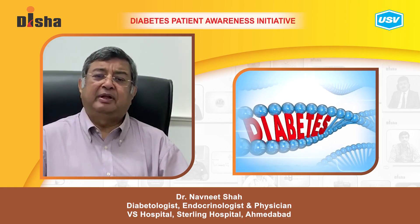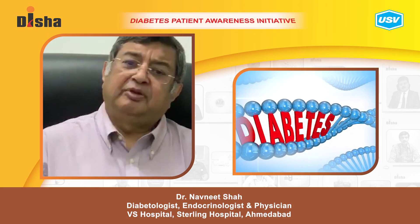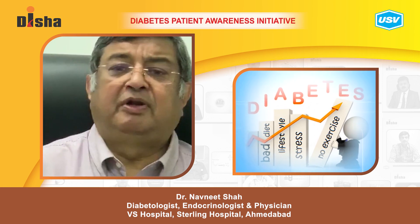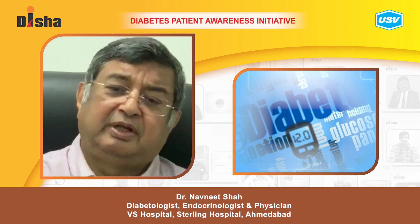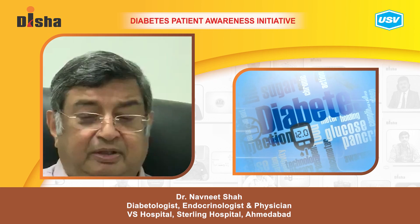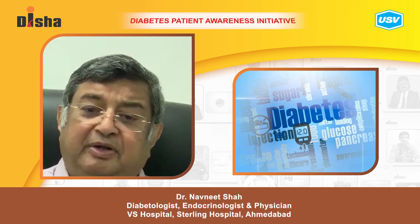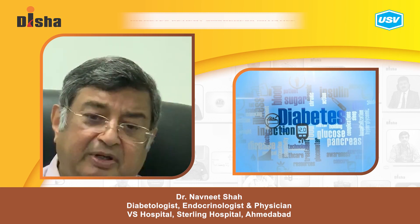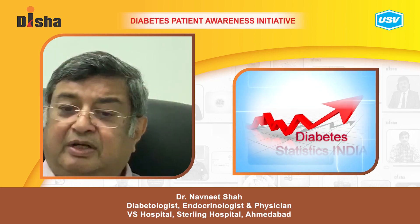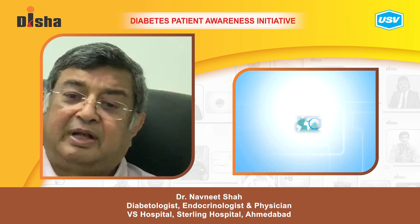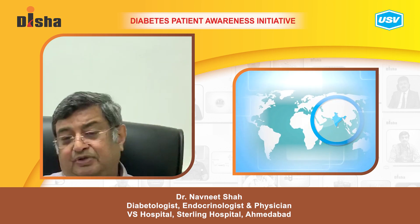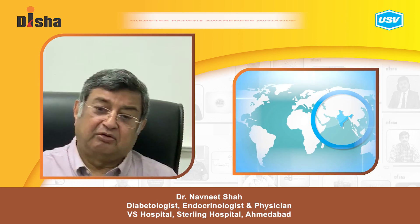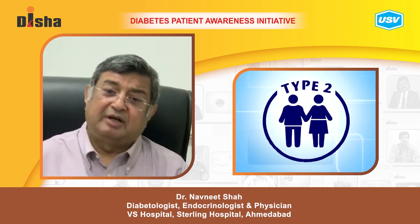Diabetes is a disorder where genetic predisposition combined with environmental factors makes you more vulnerable. Over the years, progress and affluence have made diabetes more prevalent. It is one of the most important non-communicable diseases, and prevention of type 2 diabetes is also critically important alongside pattern management.